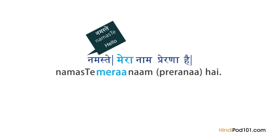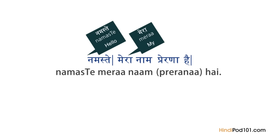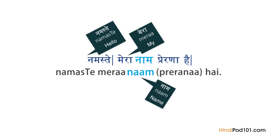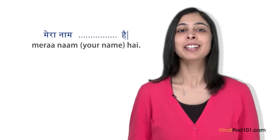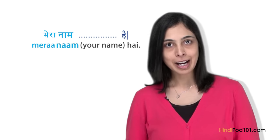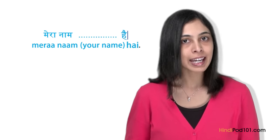Next is Mera. The word Mera means 'my.' This is a way to refer to yourself, which can be used by both men and women. Next, we have Naam. The word Naam means 'name.' Then you say your name. And finally, we have hai. Hai is attached to the end of the sentence and literally means 'to exist.'